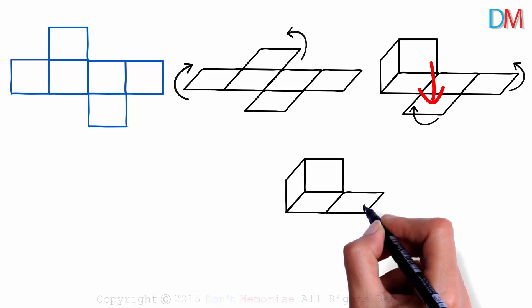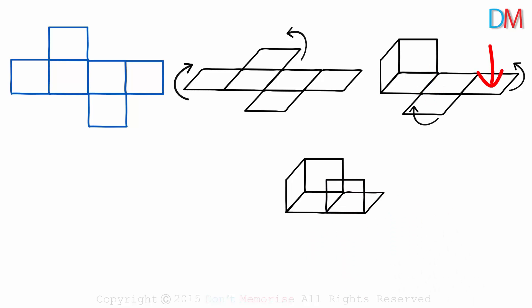This face when straightened will look like this. And this one when straightened will look like this. This is the shape we have arrived at after making these four faces vertical.